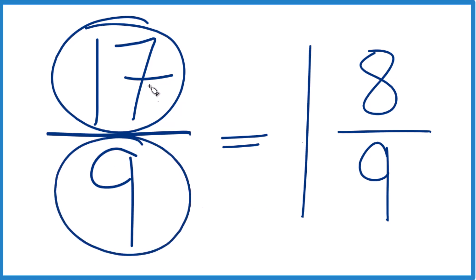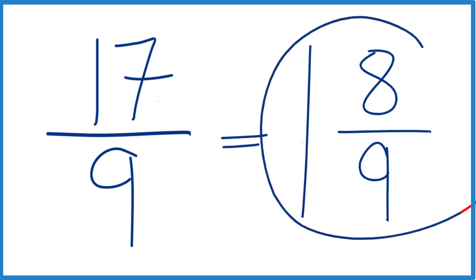That's it. It's Dr. B simplifying 17 ninths, already simplified, and writing it as a mixed number, which is 1 and 8 ninths. Thanks for watching.